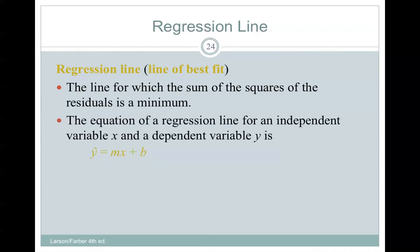The equation of a regression line for an independent variable x and a dependent variable y is y hat equals mx plus b, where m is the slope, b is the y-intercept, and y hat is the predicted y value for a given x value.